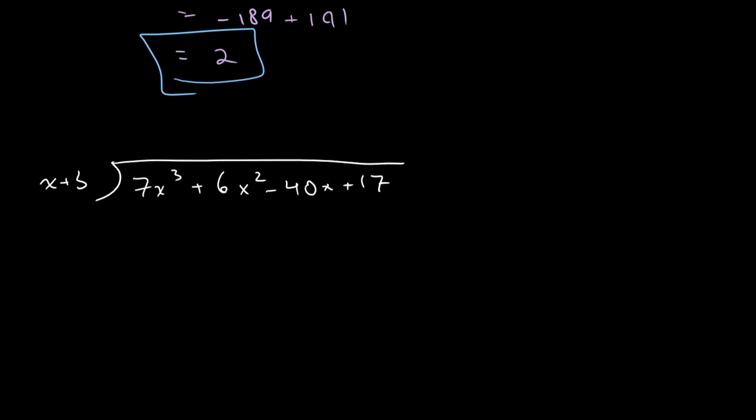We can do long division. So we get 7x² plus 7x³ + 21x² subtract. This gives us a value of these two cancel out. And this is -15x² - 40x + 17.